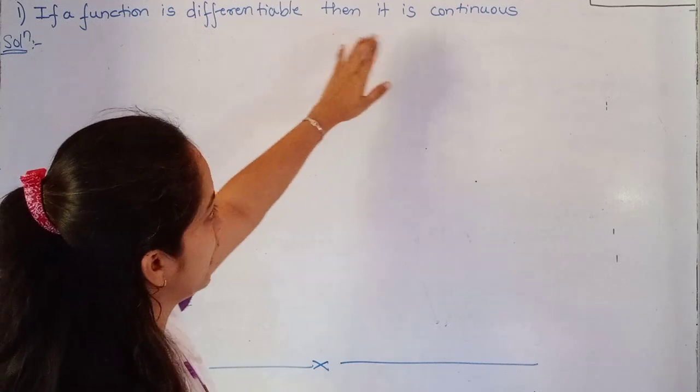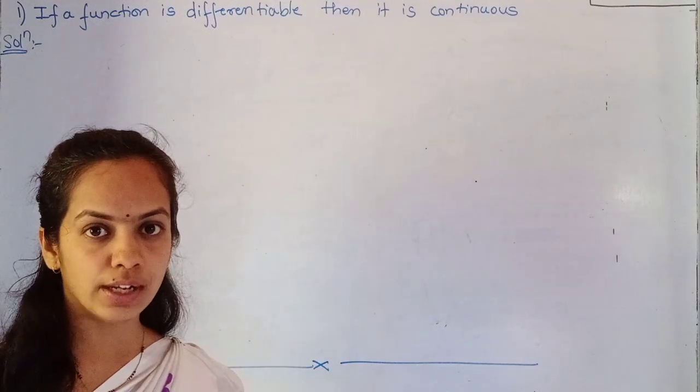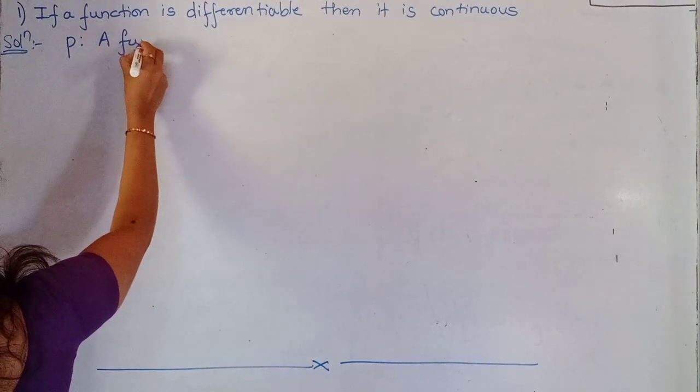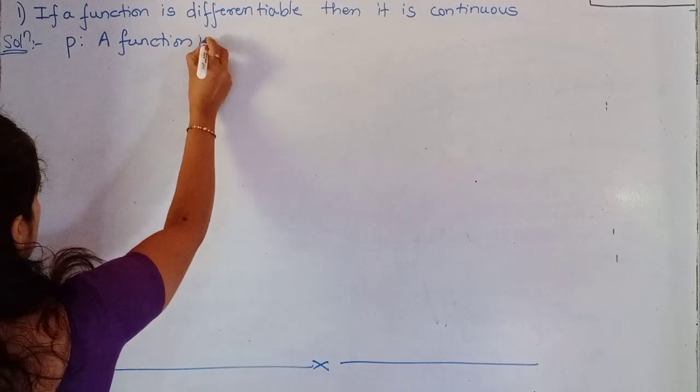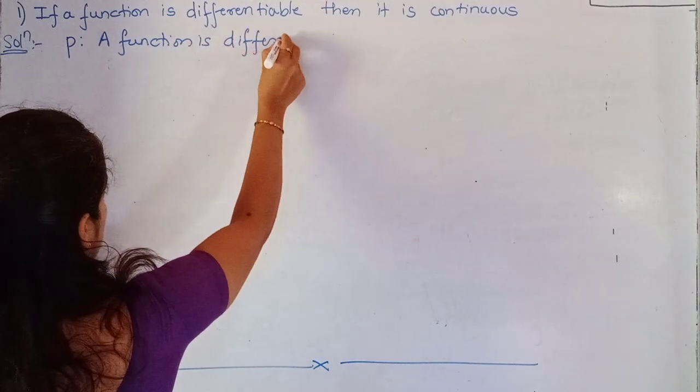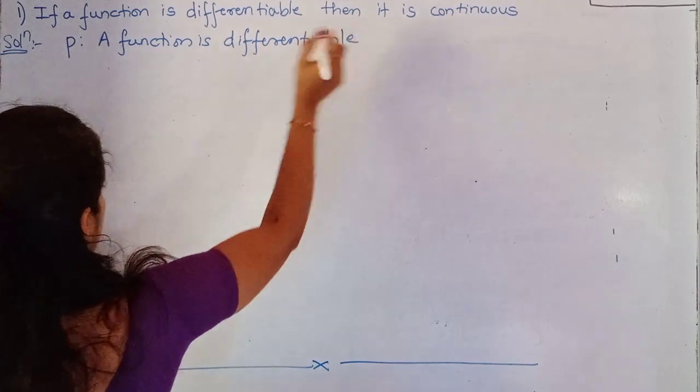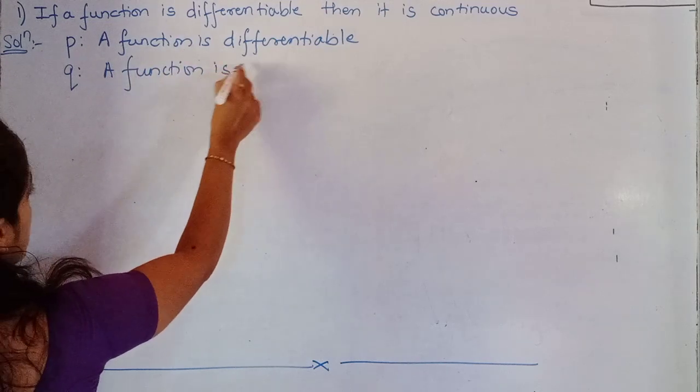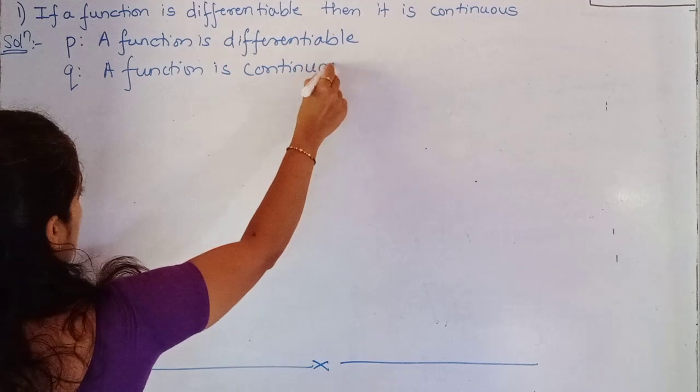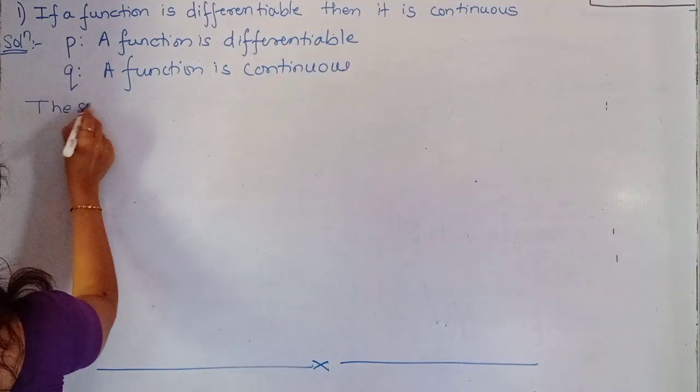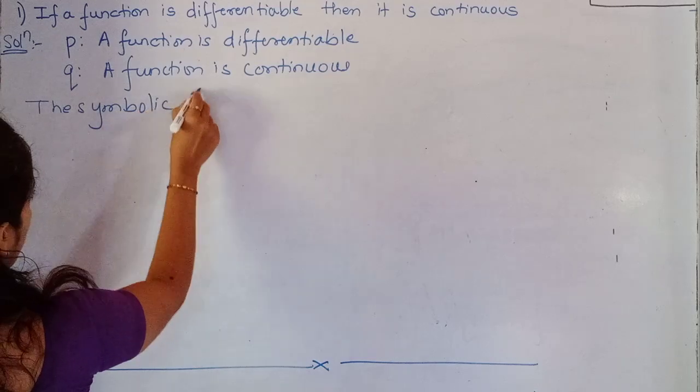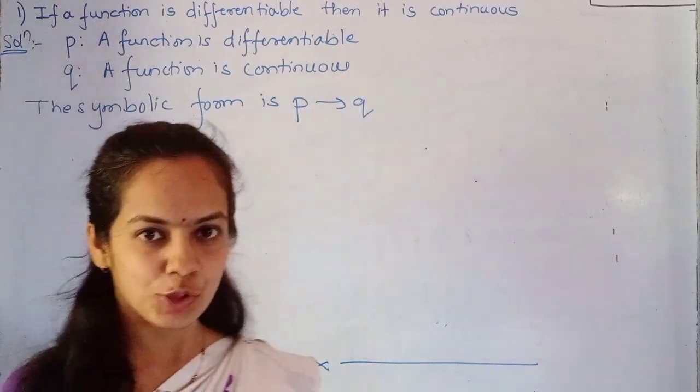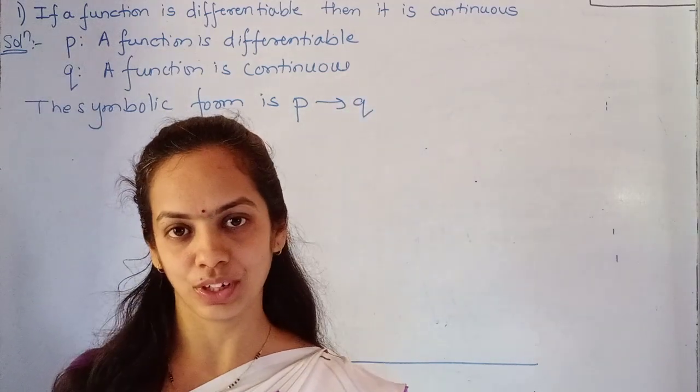The question is: If a function is differentiable then it is continuous. Here P is the first statement and Q is the second statement. The symbolic form is P implies Q. So what is P? P is a function is differentiable. And what is Q? Q is a function is continuous. The symbolic form is P implies Q.